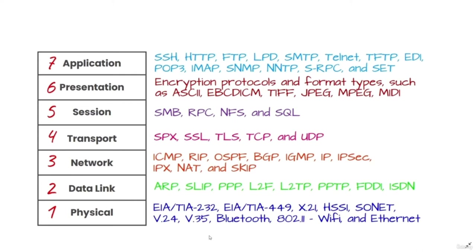The fourth layer of the OSI model is the transport layer. The transport layer manages the delivery and error checking of data packets. It regulates the size, sequencing, and ultimately the transfer of data between systems and hosts. One of the most common examples of the transport layer is TCP, or the Transmission Control Protocol.